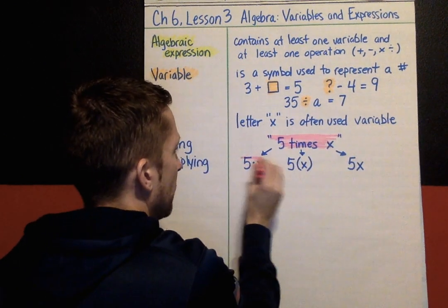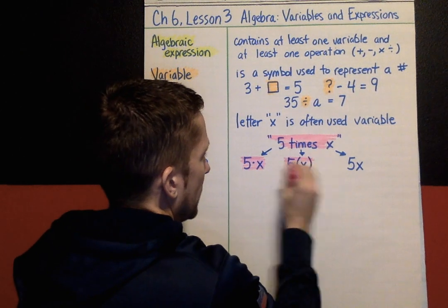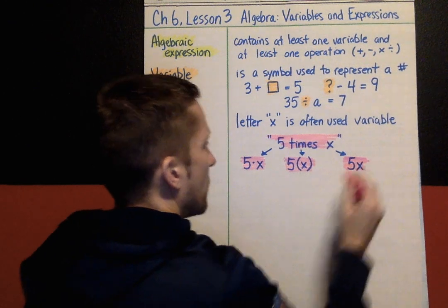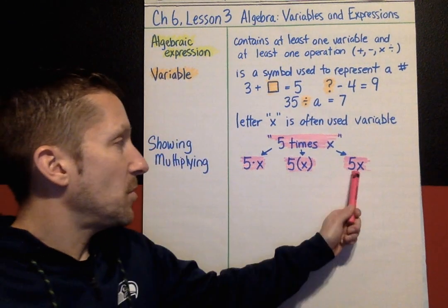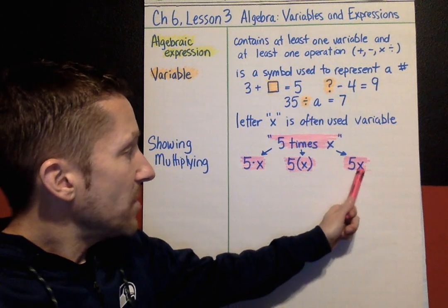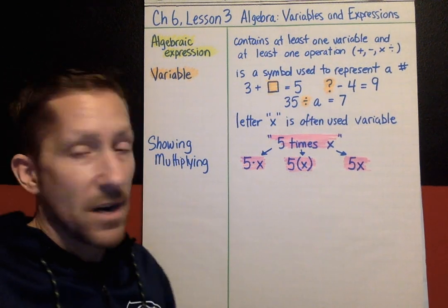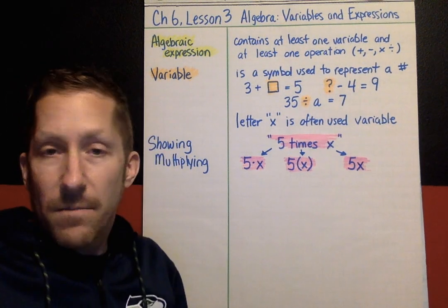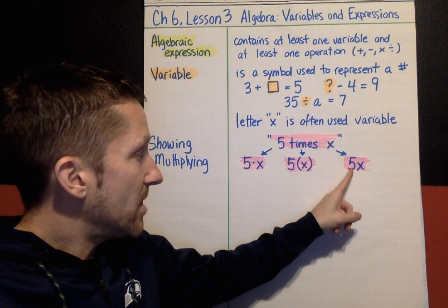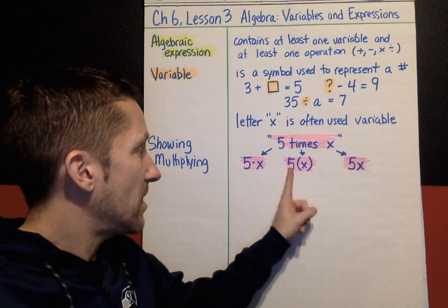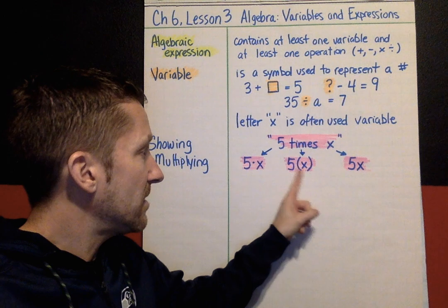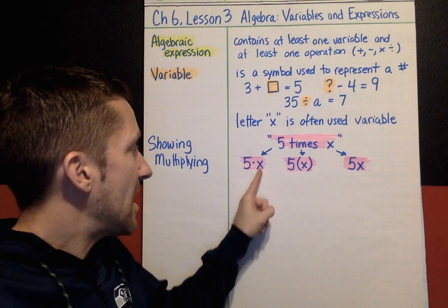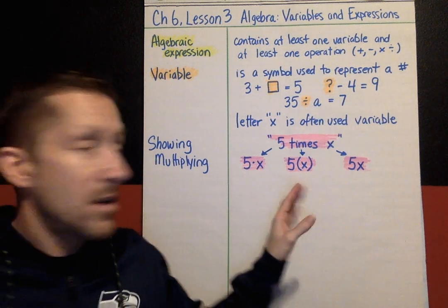All of these are interchangeable — they all mean five times x. We could write five dot x, five with x in parentheses, or just the number five right next to the variable x. Whenever you see a number right next to a variable — whether it's 5b, 5w, or any letter — they are being multiplied. Same with a number next to parentheses. This is a really important notation for showing multiplication.